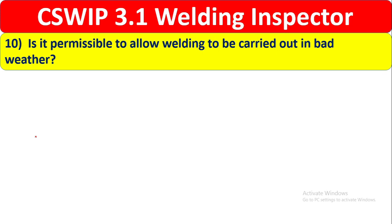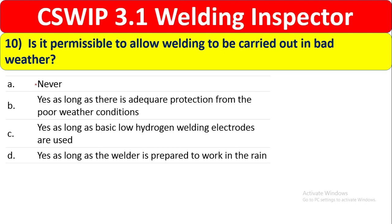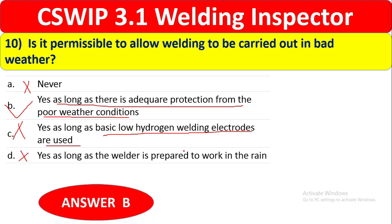Question 10: Is it permissible to allow welding to be carried out in bad weather? Never is not correct — welding can be done with protection. The correct answer is option B: yes, as long as there is adequate protection from poor weather conditions. It is not only about using low hydrogen electrodes. Bad weather can bring particles that affect welding. The welder being prepared to work in rain alone is not sufficient. Option B is correct.